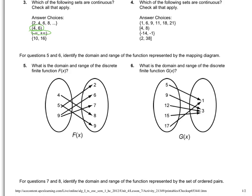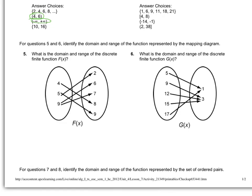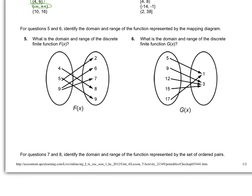For questions five and six, identify the domain and range of these mappings. The domain would be four, five, and nine — any time you identify domain and range for mappings or ordered pairs, you always use fancy brackets. The range would be two, six, seven, eight, and nine.